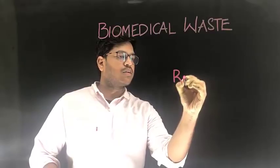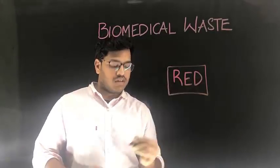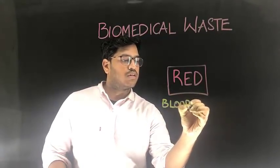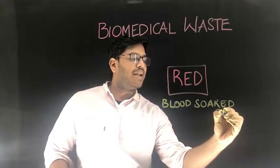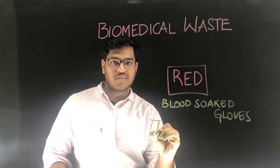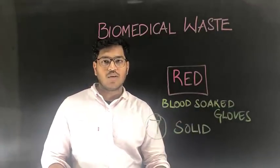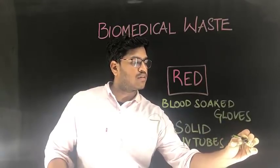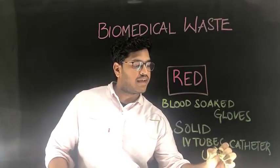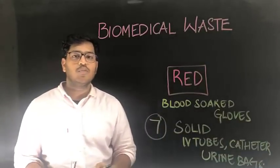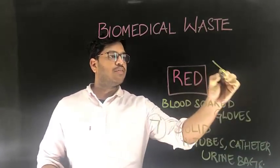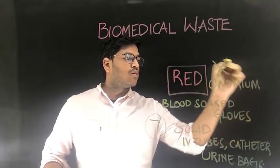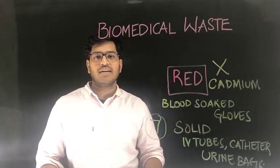The next color-coded bin or container is red. The waste that are segregated in red color-coded bin includes blood-soaked gloves and category 7, solid waste. Solid waste includes plastic waste such as IV tubes, catheters, and urine bags. The point to be noted is red color-coded bag should never be incinerated. It has a heavy metal called cadmium which does not change its form on heating.